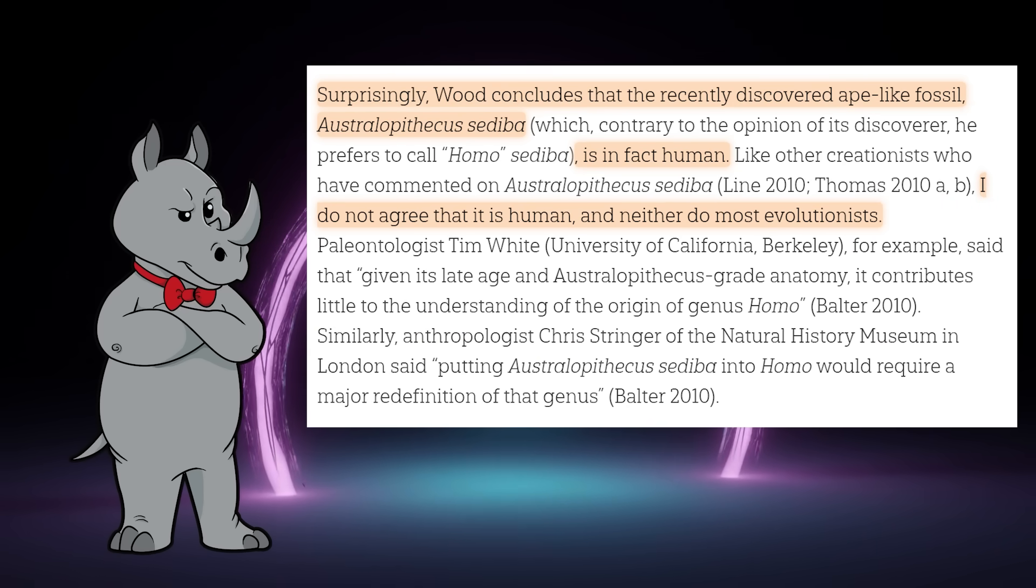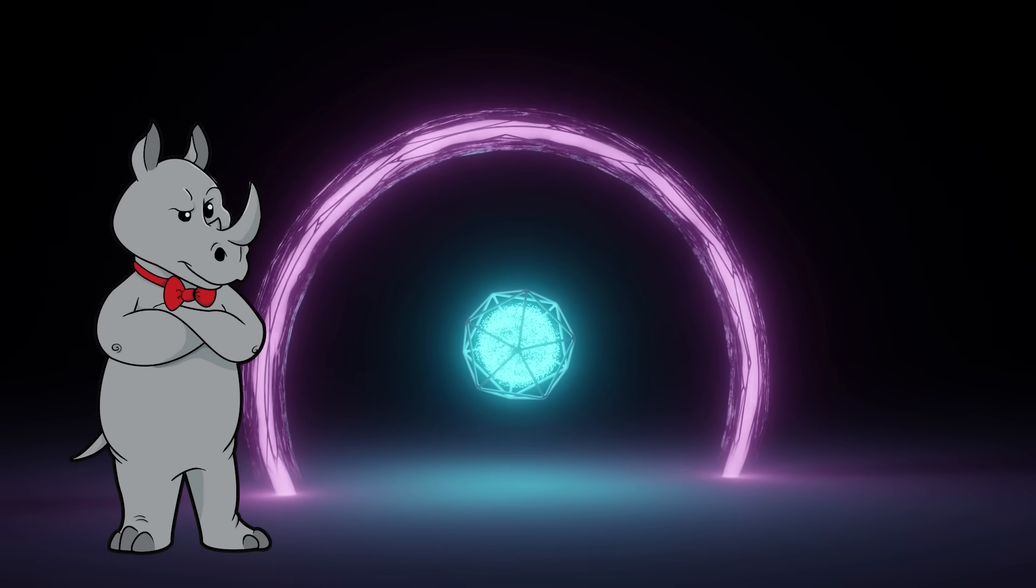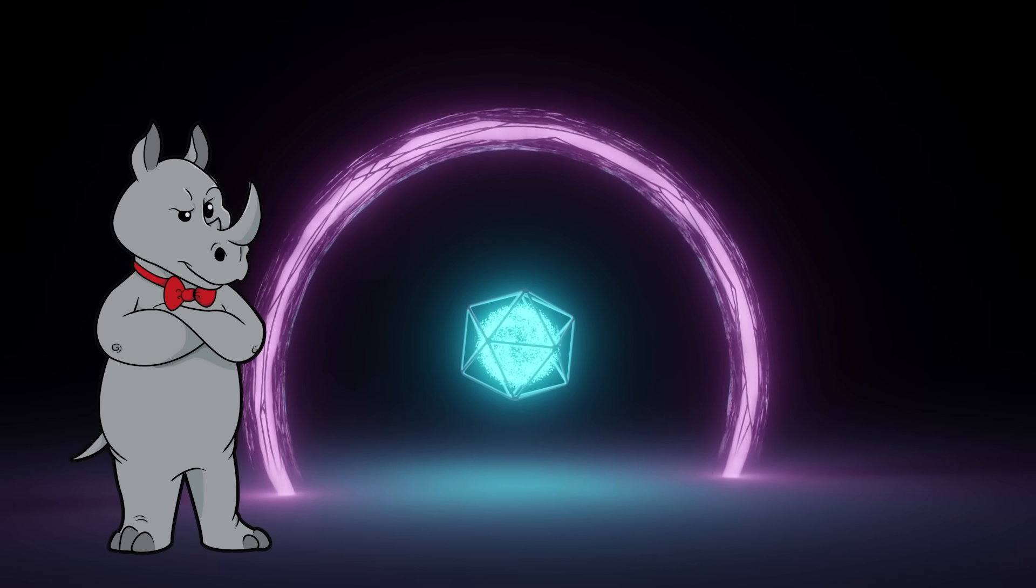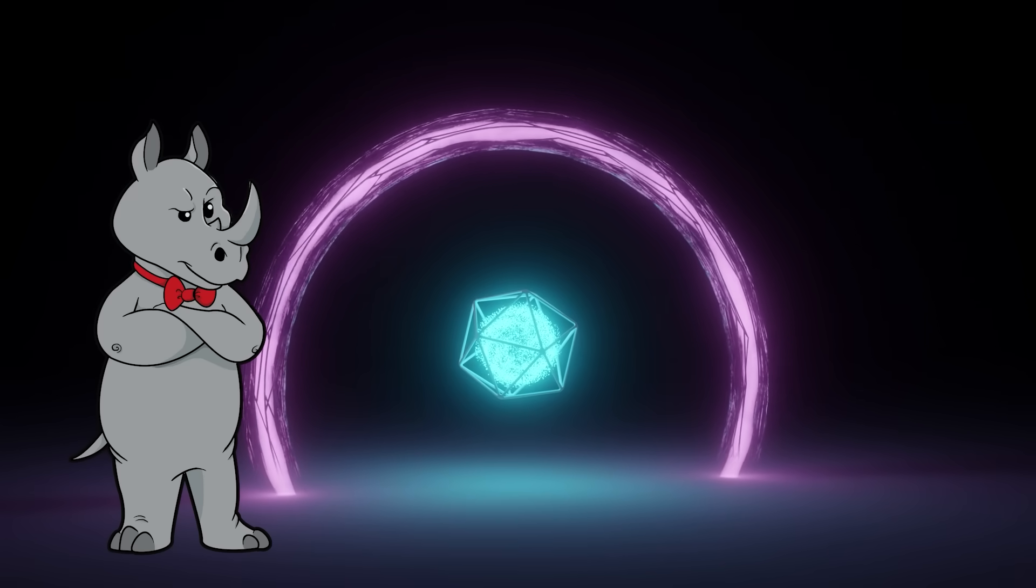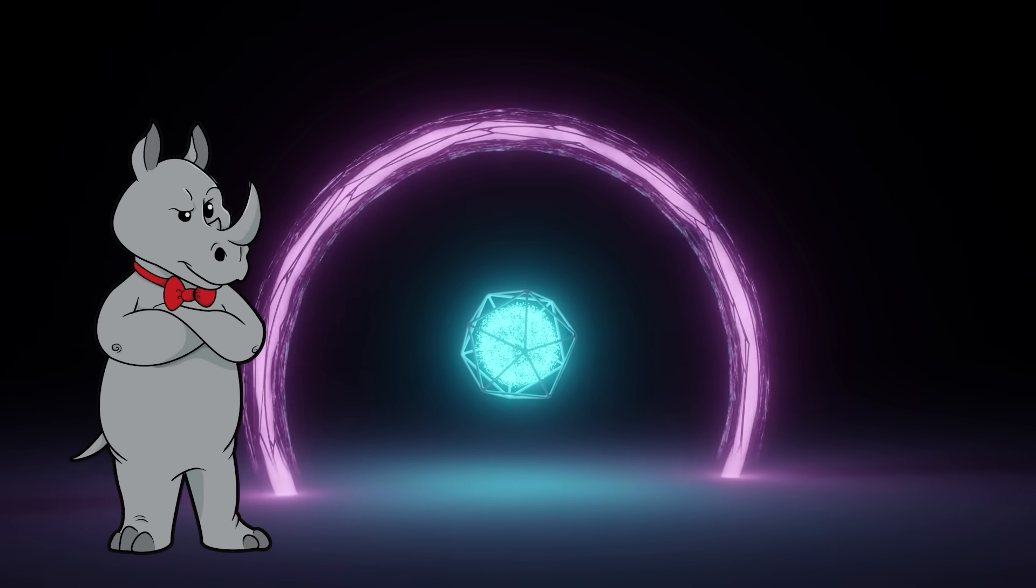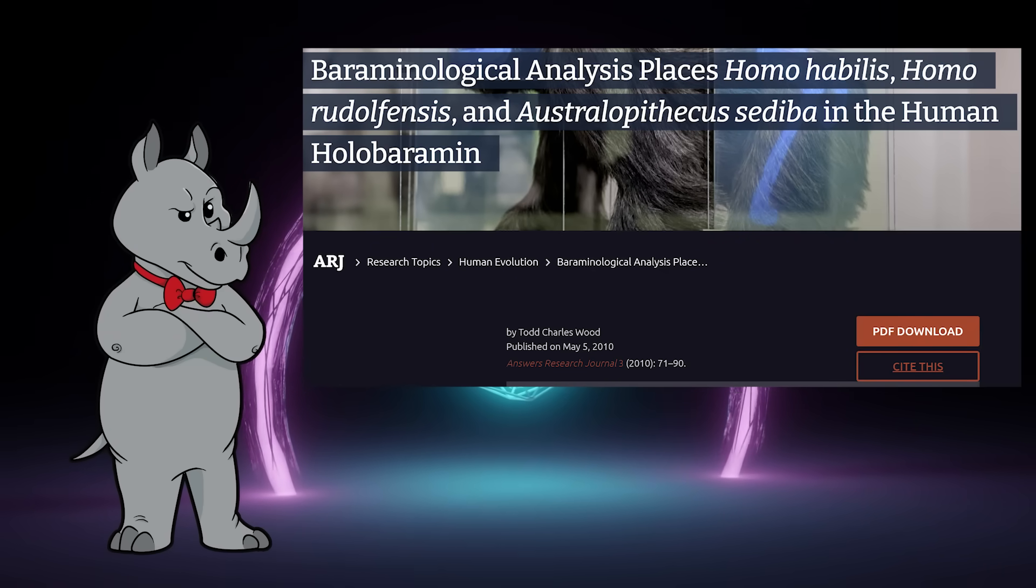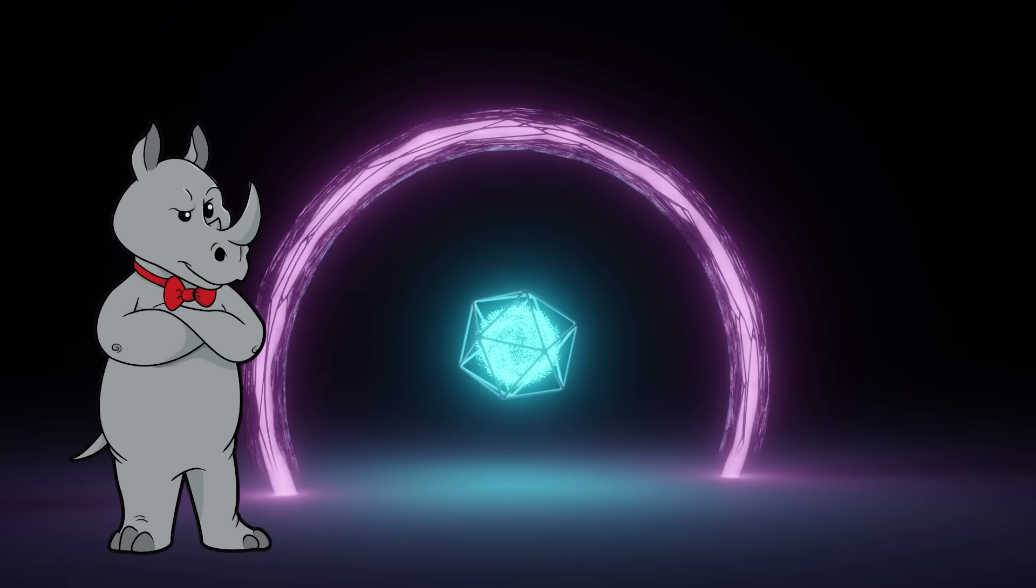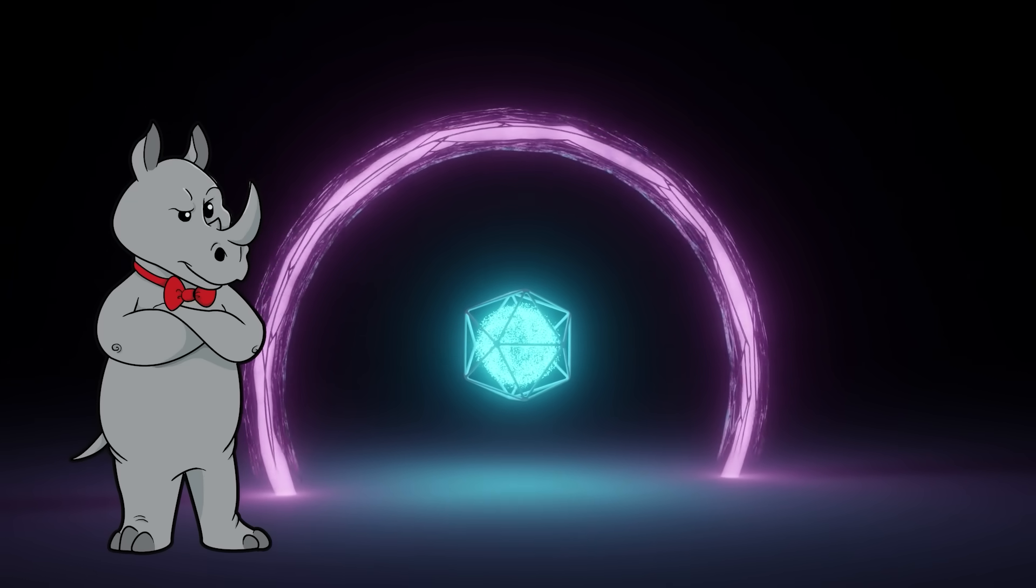So when they say this species is clearly just an ape while this other one is clearly human, they're overstating their own case. But why is that amusing? Because one of the papers, the one arguing for sediba being human, was authored by none other than Todd Wood, the guy I'm currently responding to. So it's a bit rich to hear him complain about evolutionists changing things to fit with evolution when he was directly involved in that exact kind of debate in a creationist journal.